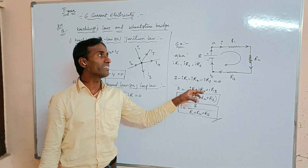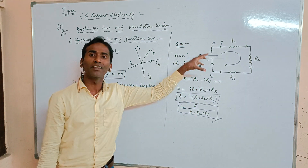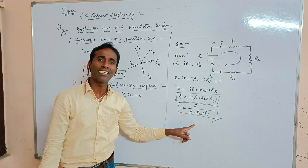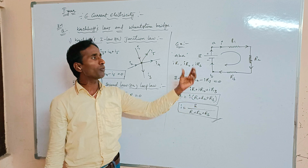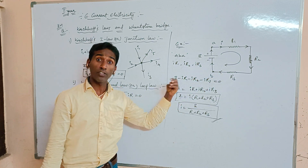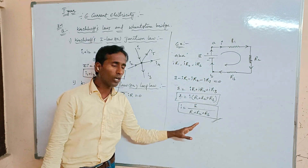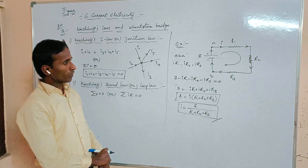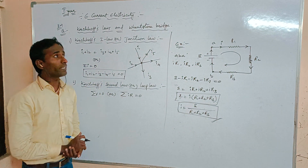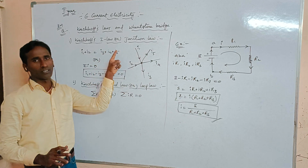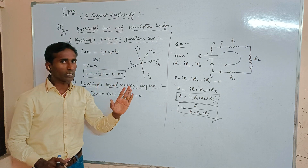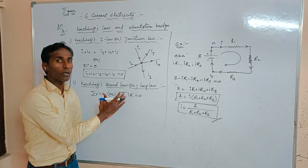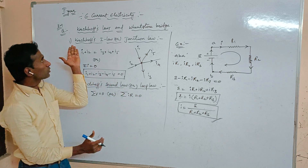However many resistances are in the circuit, substitute them in the formula i = E divided by total resistance. If you have n resistances, substitute and find the answer easily. This completes Kirchhoff's Laws.